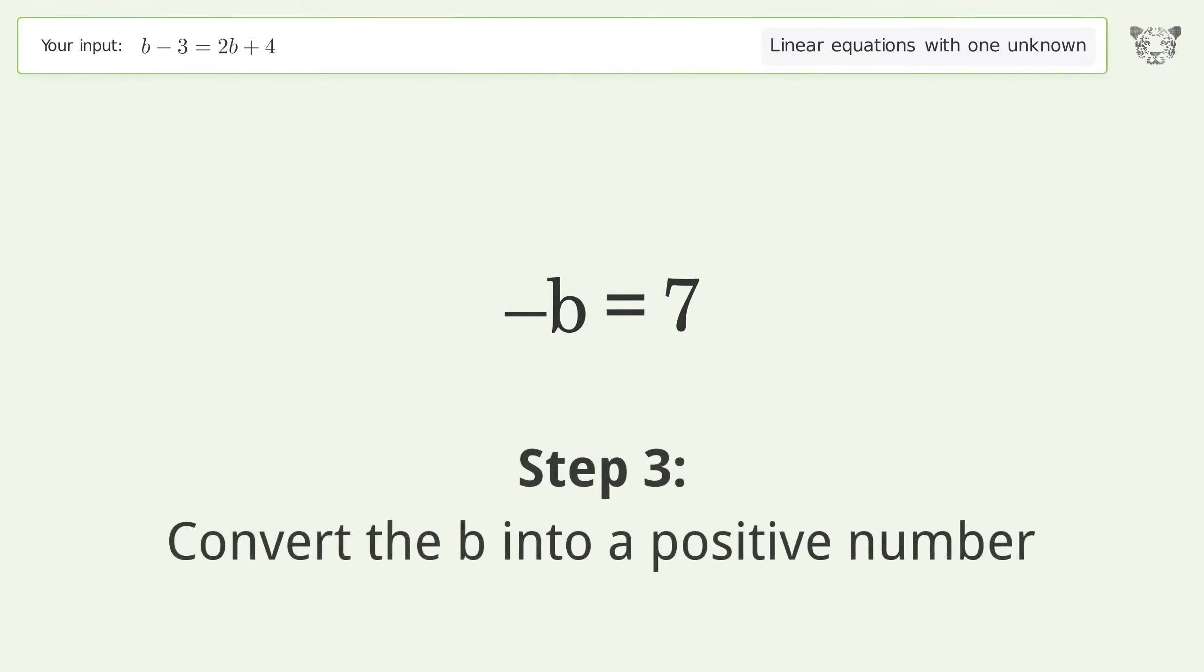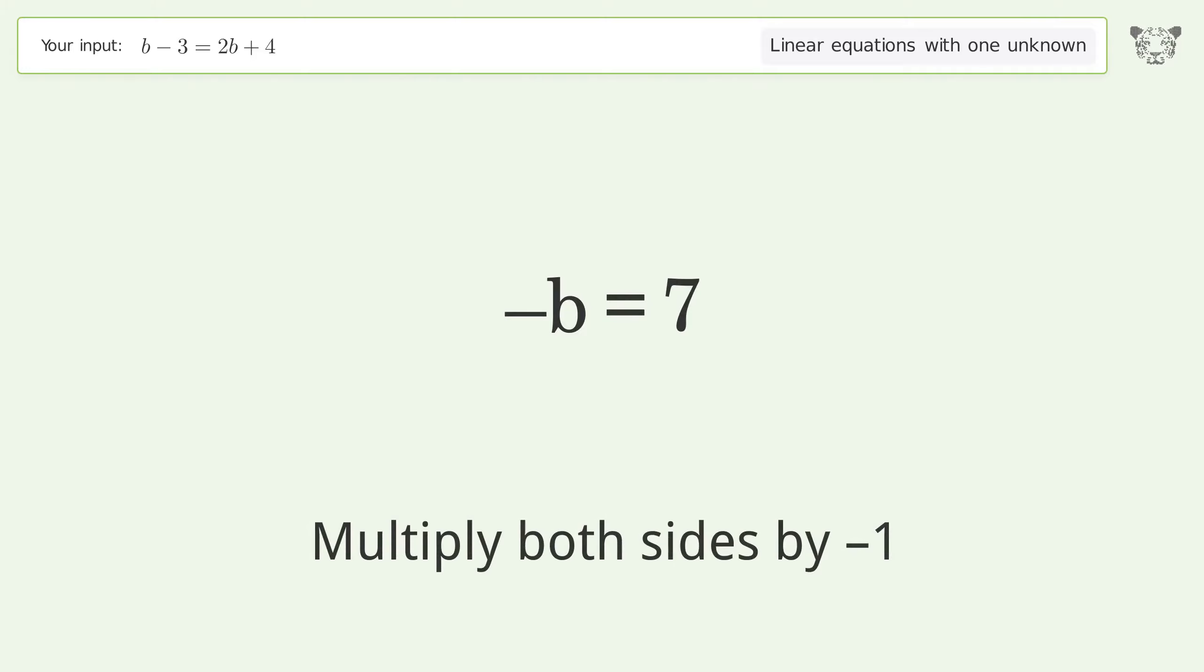Convert the b into a positive number. Multiply both sides by negative 1. Remove the 1s. Simplify the arithmetic.